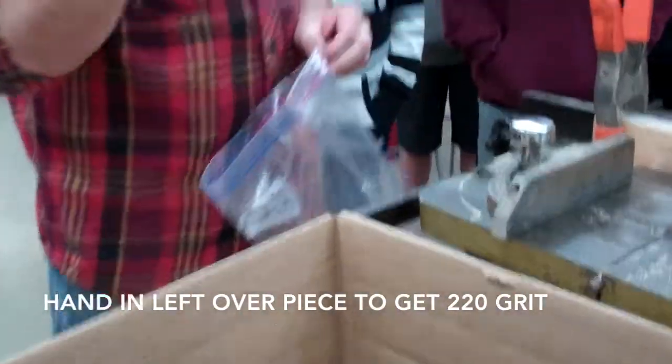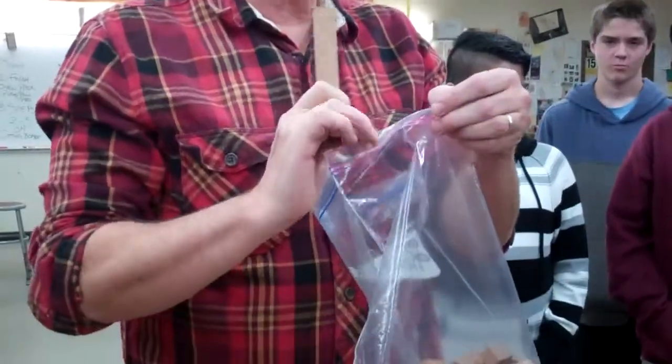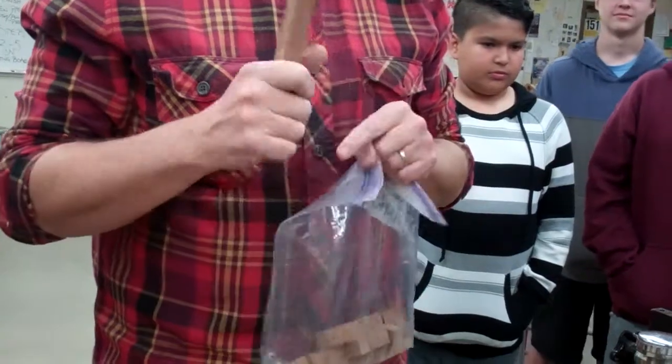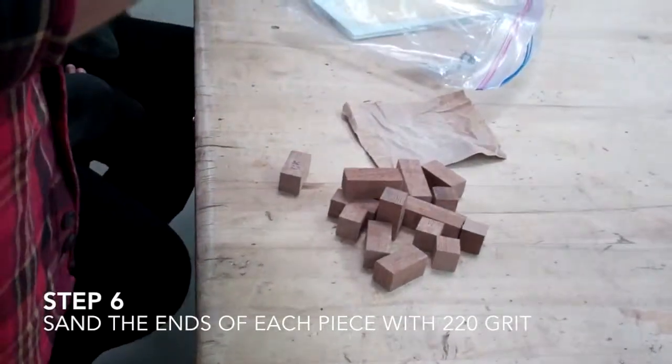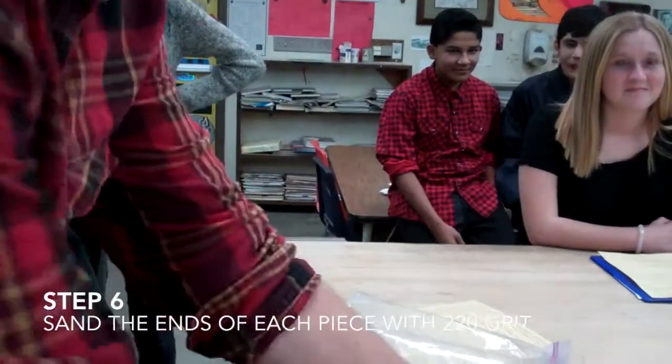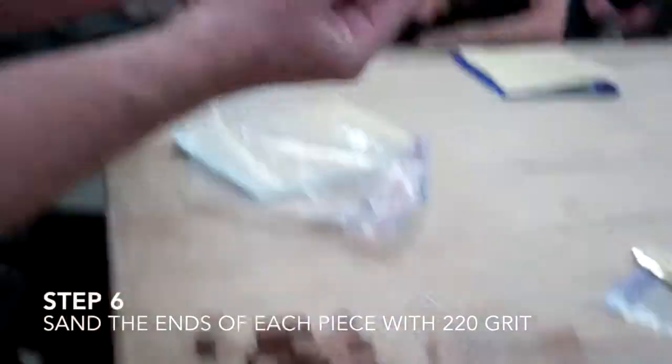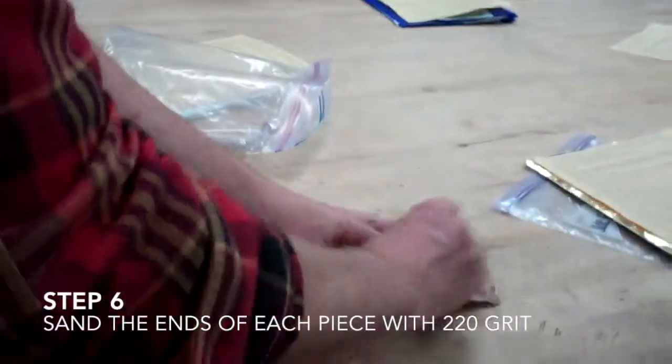You're going to hand this piece in. I'm going to give you 220 grit. Then you're going to sand these pieces. Just sand the ends until it's smooth and there's no splinters. If you feel any ridges, keep sanding that.